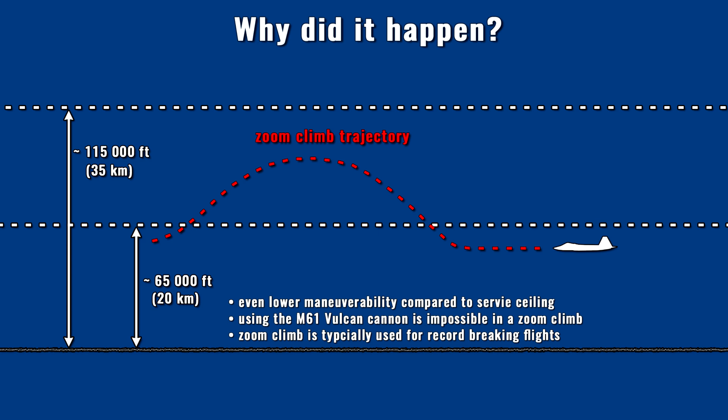The problem with the zoom climb maneuver is that the plane flies at an altitude where controllability becomes very poor below a certain speed. The control surfaces can become ineffective. In a sense, the only goal is maintaining 3-axis controllability and avoiding departed flight. There is no way a pilot could aim with a cannon while flying on a quasi-ballistic trajectory toward a calculated interception point.